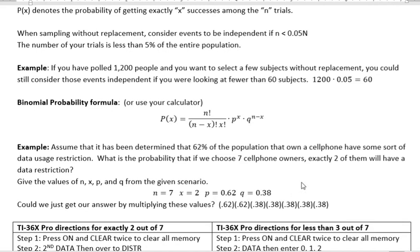So we're going to do seven trials. One, two, three, four, five, six, seven. I have seven listed here. And we want two of those to have, to say, yes, we have a data restriction. So couldn't we just do this, 0.62, which is the success, success, and then five failures? Would that give us our answer?